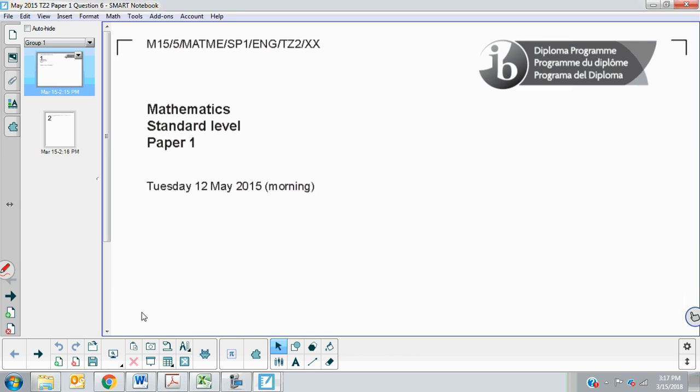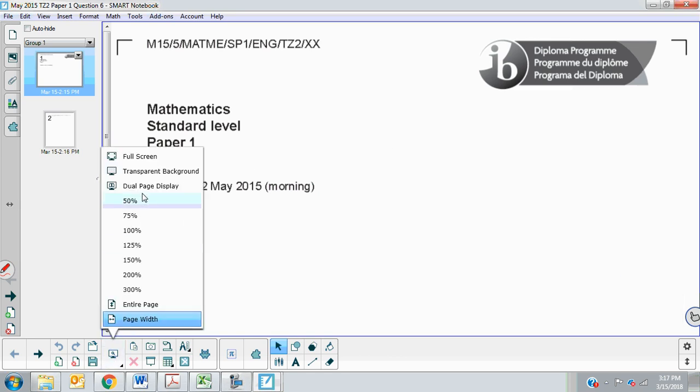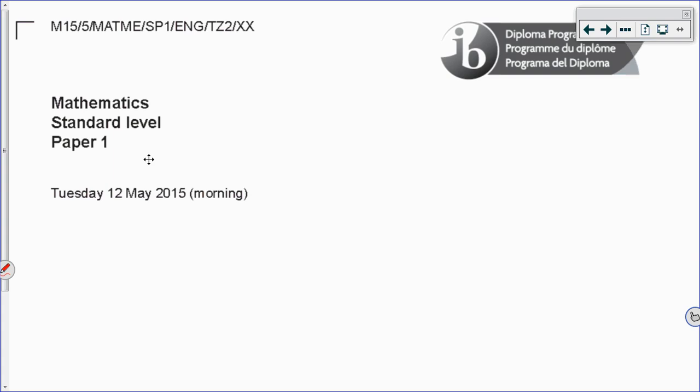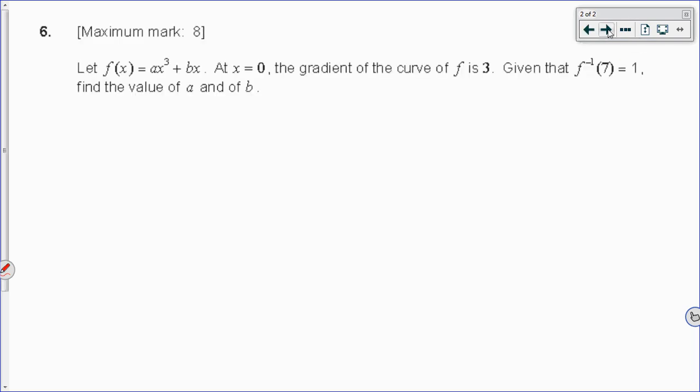In this video, I'm going to go over question 6 from the May 2015 IB Math SL exam, time zone 2. This is a calculus question as well, the third calculus question in a row on this paper. This is a classic IB question in that you have to read and pay attention to the information that's given and figure out what you're meant to do with it.